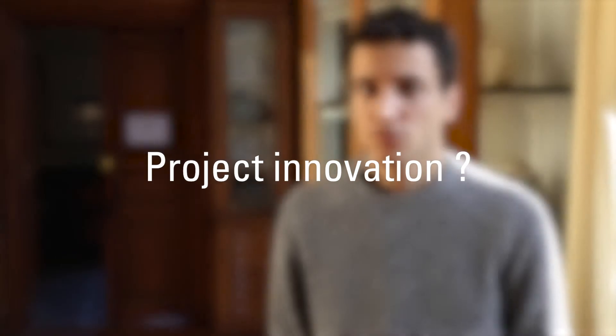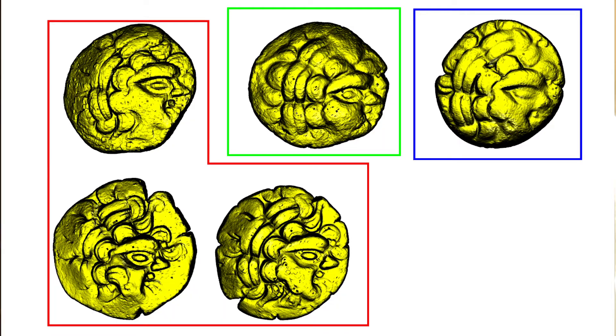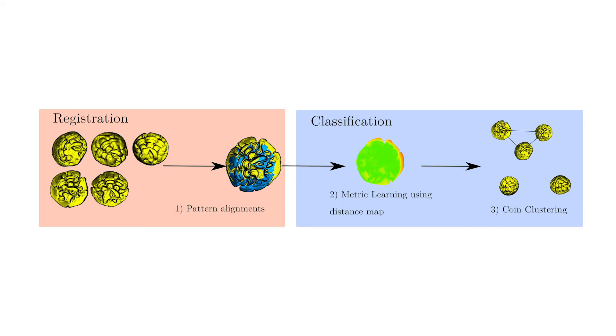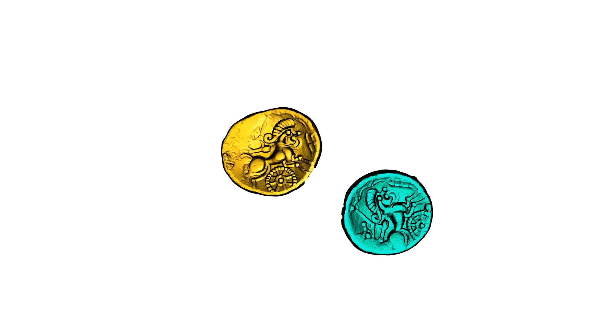Our contribution is that we use 3D data, which is rather new. We also use an original pipeline to process data to recognize patterns on coins: first we align, and then we make the decision, which is rather new. And also to align patterns, we use deep learning on 3D data, which is also very new.